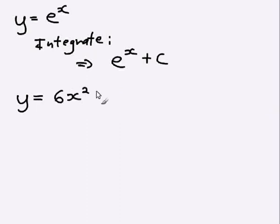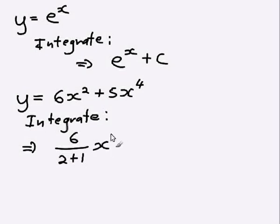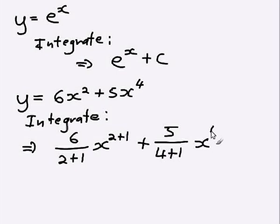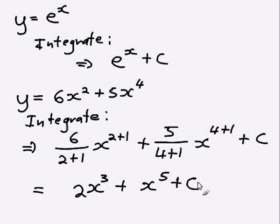What about when we have more than one term in our function? That's easy — you can just integrate each term separately. So if I want to integrate this, I can integrate the 6x squared term first. I take the 6 and divide it by the power plus 1, multiply by x and increase the power of x by 1. Then do the same for the next term: take 5 divided by the power plus 1, which is 4 plus 1, times x, and increase the power from 4 to 5. So this becomes 6 divided by 3, which is 2, x to the power 3, plus 5 on 5 which is just 1 so we don't write it, giving x to the power 5, plus our constant of integration c.